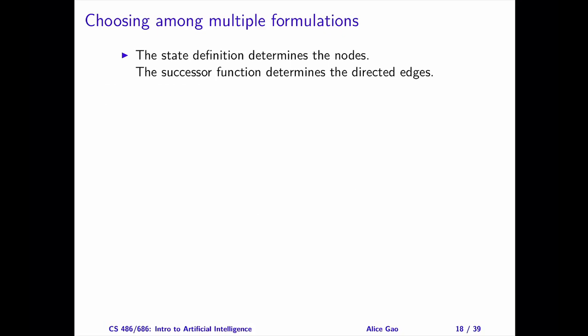When constructing a search graph, we can create the nodes using the state definition, and we can create the directed edges using the successor function. Ideally, we want to choose a state definition that minimizes the number of nodes in the graph. Doing this reduces the number of nodes we need to explore in the worst case. We also want to choose the successor function such that the graph has fewer edges if possible.